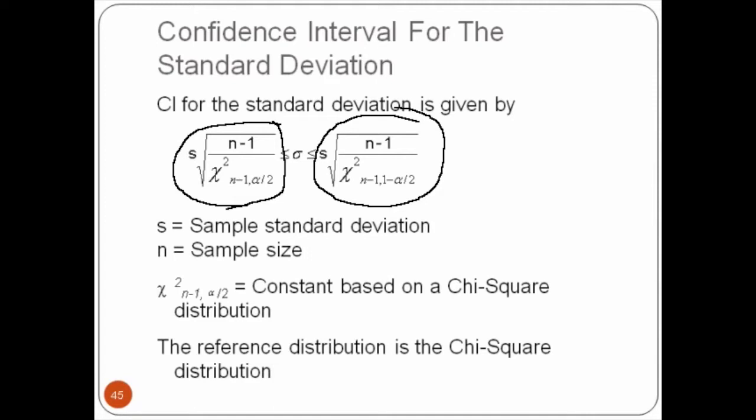Here we use a distribution called chi-square. This symbol here indicates this is chi-square. Calculating chi-square is tedious, so there are readymade tables available to do the calculation. You can also use chi-square function in Excel.